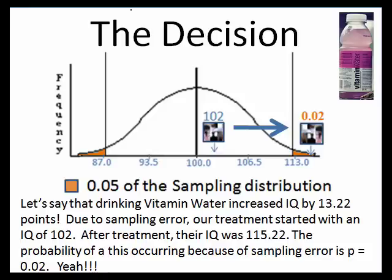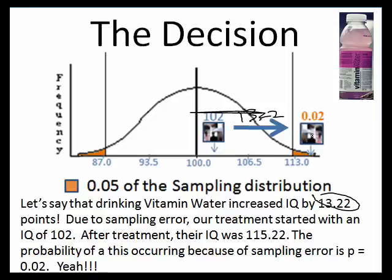Now let's consider something more positive. Let's say that drinking vitamin water actually improves your IQ — in fact, it improves it by 13.22 points. The group's IQ started at 102, already giving a small advantage due to sampling error. Adding the 13.22 improvement gets the group way out to around 115.22. Because they're way out there, the probability of that happening due to chance alone is 0.02 — a pretty small probability — so we'd reject the null hypothesis. The treatment was effective; we made a correct decision.